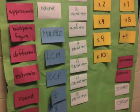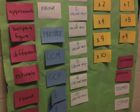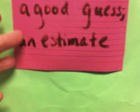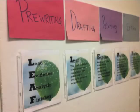Word walls can take so many forms. One is interactive. Here's an example in a math classroom. Cards have the concept or strategy on the front, and students can see the definition or an example on the back when they flip it up. A second is unit specific. In my own classroom, I have the writing process and parts of the leaf paragraph structure prominently featured on my wall.